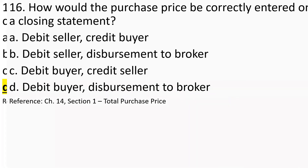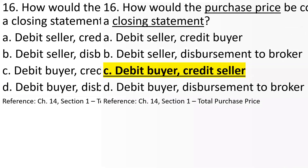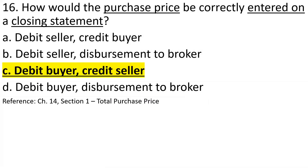Number sixteen: The purchase price is correctly entered on a closing statement as a debit to the buyer and a credit to the seller. The buyer is purchasing the house and bringing in money — debited — while the seller receives that money as a credit for selling the property.